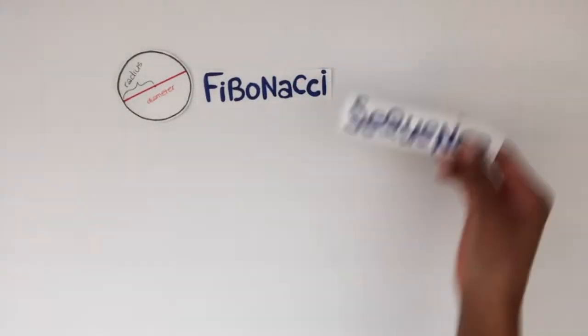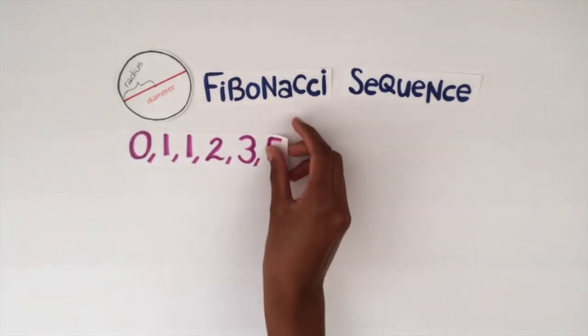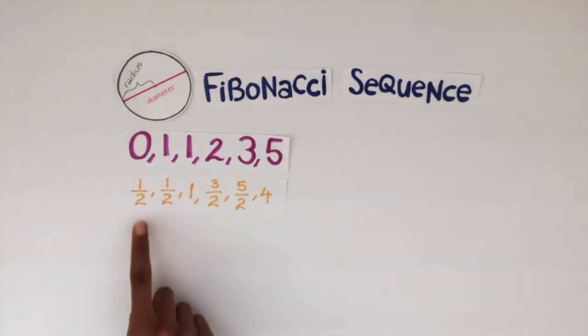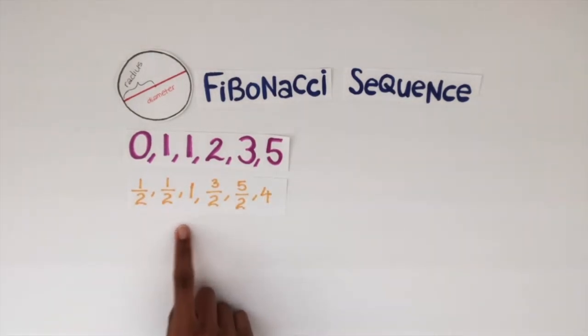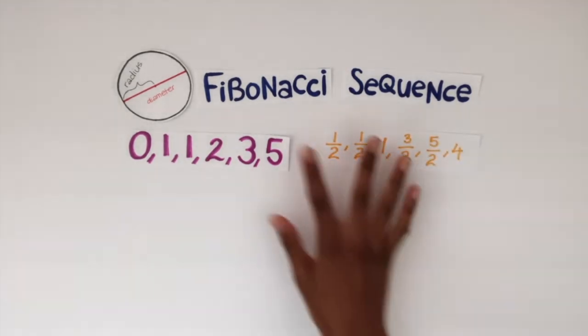For this art project, we're going to determine the radius of our circles using the Fibonacci sequence and others like it. You can use the Fibonacci sequence directly, 0, 1, 1, 2, 3, 5, and so on, or another one like it, such as 0.5, 0.5, 1, 1.5, 2.5, and so on.